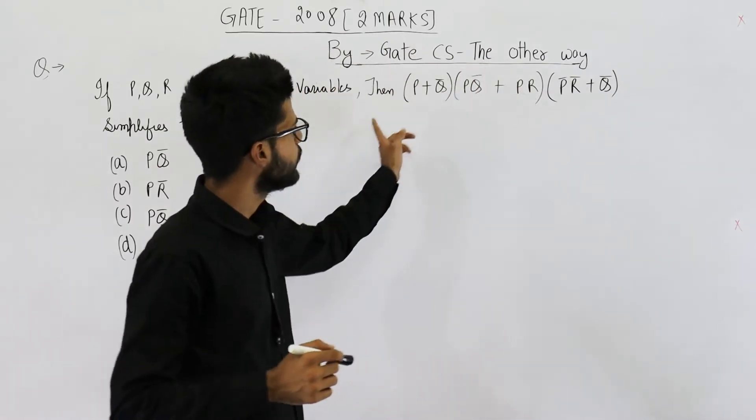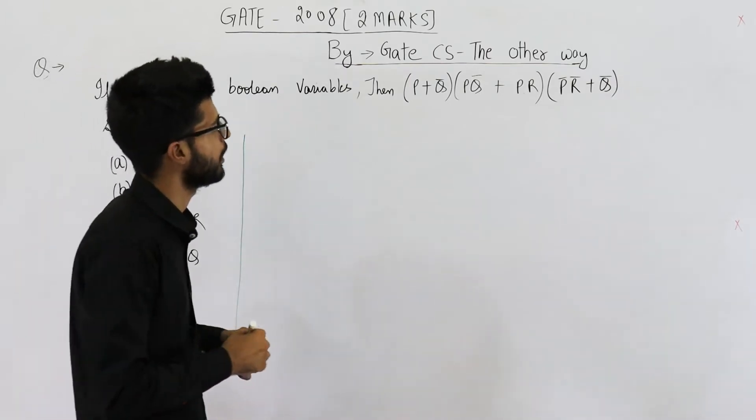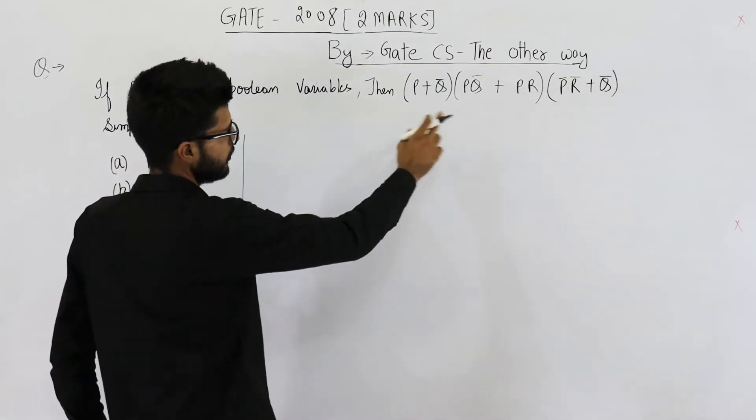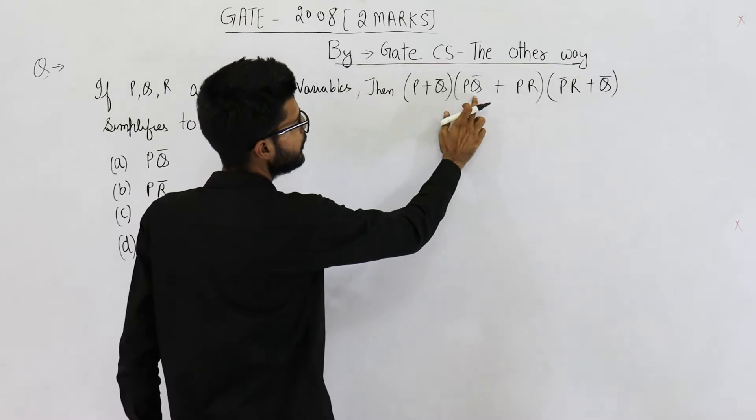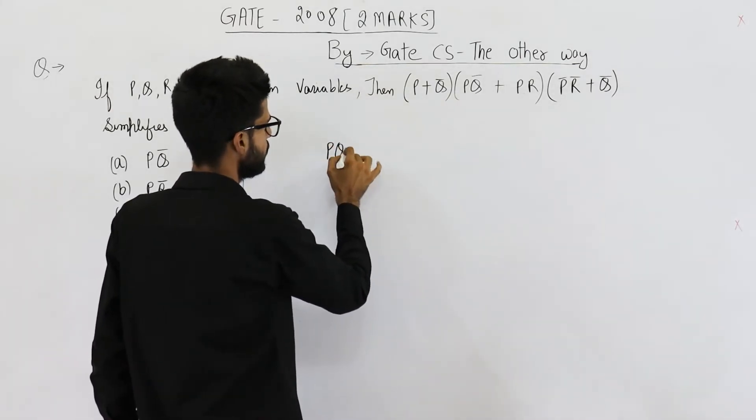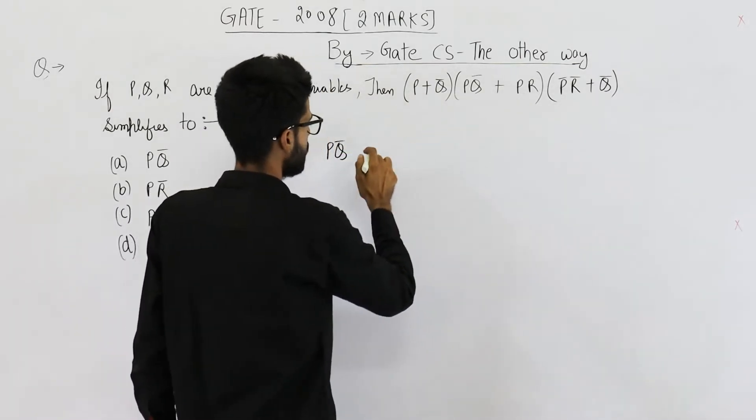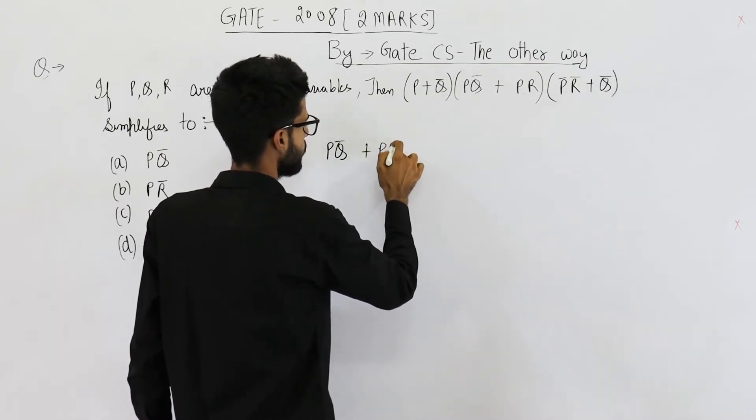That's the reason you can use the boolean laws here instead of K-map. So let's just simplify it. P into PQ̄ will be PQ̄ only, and P into PR will be PR.